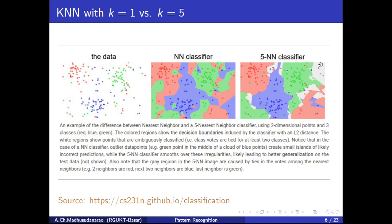With k equal to 5, those odd regions get merged into the green color region — that's the benefit. The white regions in the k=5 plot correspond to conflicts. For example, in a 5-nearest-neighbor classifier, if 2 out of 5 belong to red, 2 out of 5 belong to blue, and 1 out of 5 belongs to green, then by majority we can't decide between blue and red since both are 2 — that's why those regions show as white.